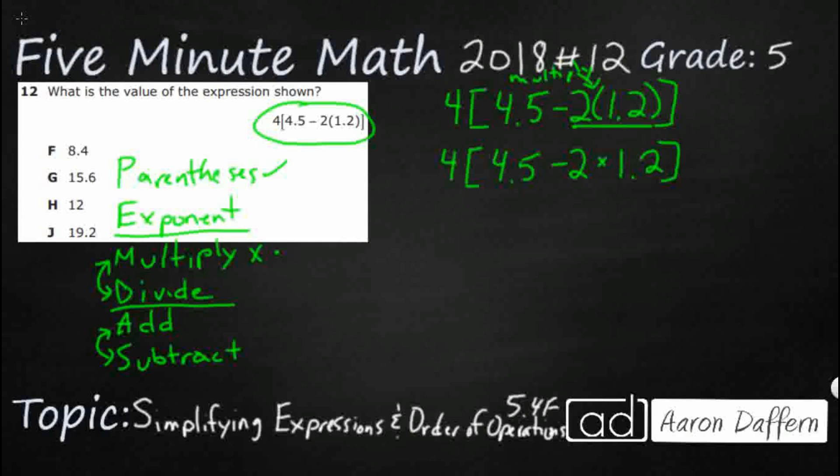So inside this parentheses, which is this bracket, we've got a subtraction, we've got a multiplication. You see our multiplication comes first, so let's take care of our multiplication. So we need 2 times 1.2, so we're going to simplify that.